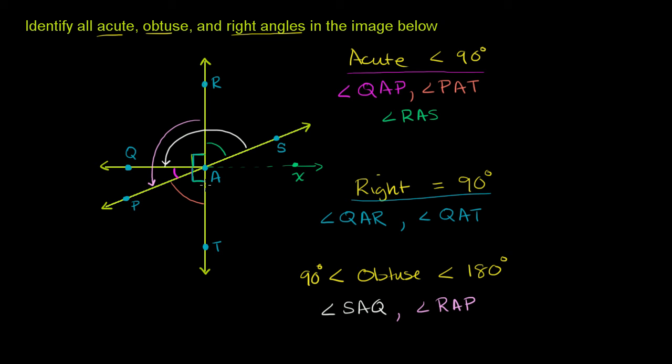And let's see, RAT is a straight angle, so for our purposes we will not consider that obtuse. And have I found everything? Have I found everything? Am I not missing something?